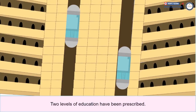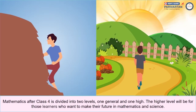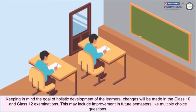In NEP, two levels of education have been prescribed. Many learners face difficulty in understanding mathematics or it is not their subject of interest. Mathematics after Class 4 is divided into two levels — one general and one higher. The higher level will be for those learners who want to make their future in mathematics and science. Changes will also be made in the Class 10 and Class 12 examinations, which may include improvements such as multiple choice questions.